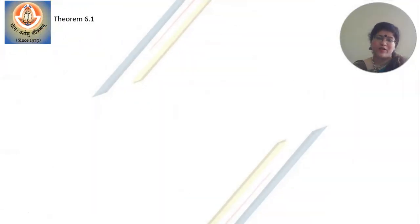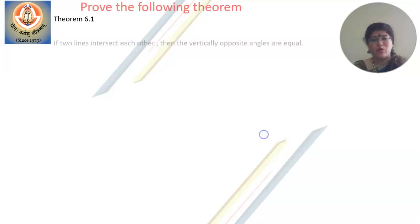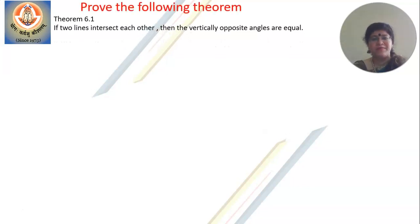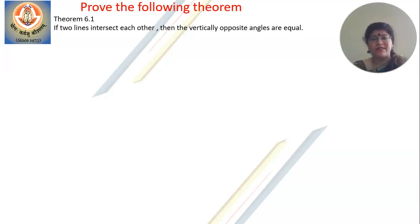Theorem 6.1 — I want all of you to make a note of this theorem. Write it down in your notebooks. What does this theorem state? If two lines intersect each other, then the vertically opposite angles formed are equal.